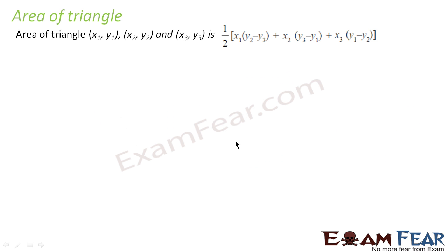Now we will study application of determinant to find area of triangle. So if you have a triangle with vertices x1, y1, x2, y2, x3, y3, in that case we can find the area of triangle to be 1 by 2 x1(y2 minus y3) plus x2(y3 minus y1) plus x3(y1 minus y2). The same thing can be represented in the form of determinant.